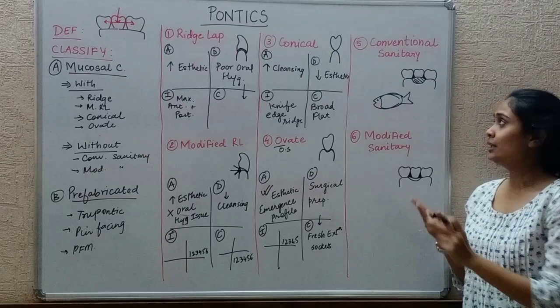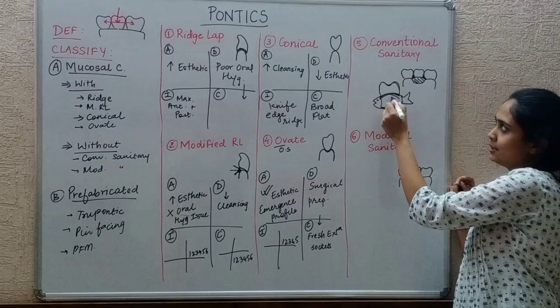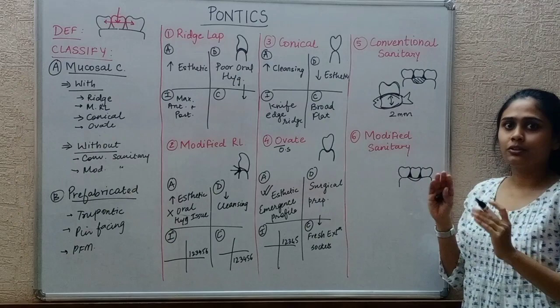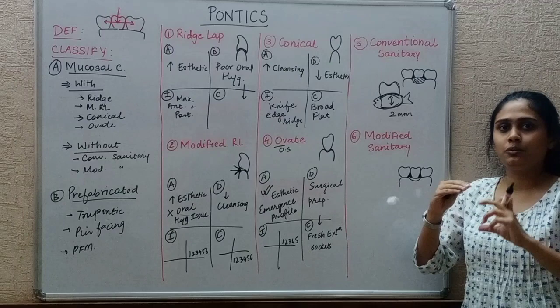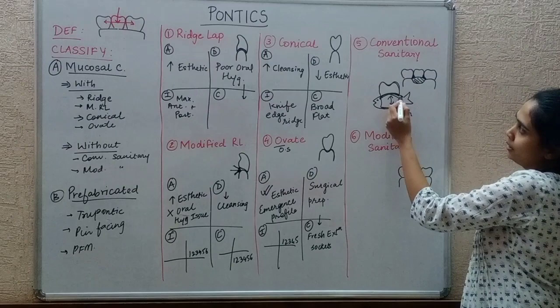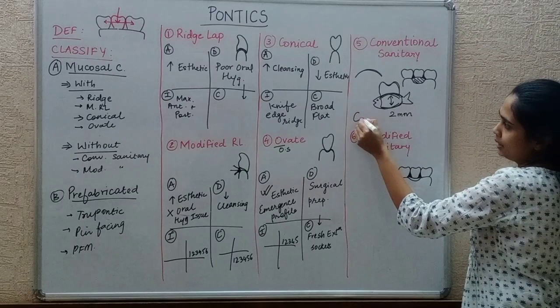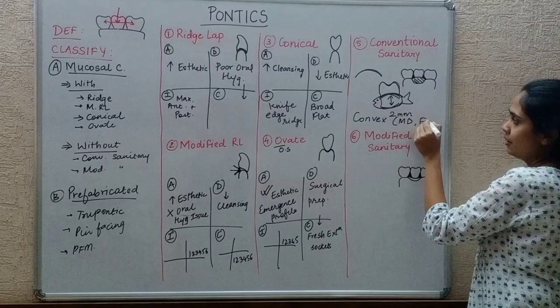The second point: the space between the gingival surface of the pontic and the alveolar mucosa is 2 mm — as given by Rosenstein, though it may vary in different books. The third point: the gingival surface of the pontic — the surface towards the mucosa — is convex both mesiodistally as well as faciolingually. These conventional and modified sanitary pontics are given in mandibular posterior areas where there is no aesthetic concern and where cleaning is easy.